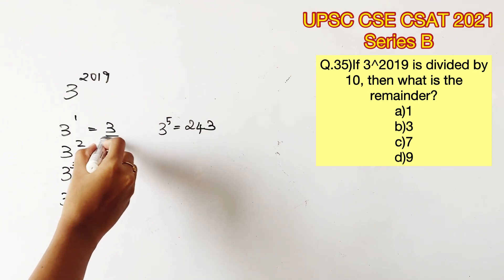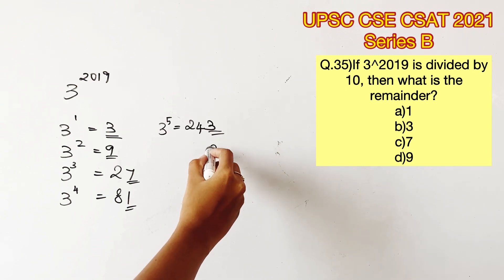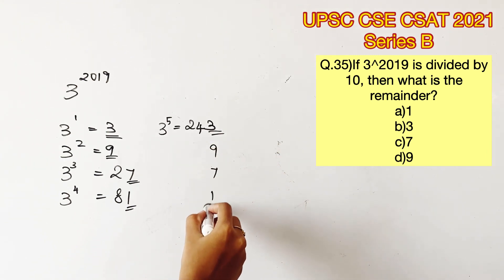Now if you notice the unit's place of all these powers, it goes from 3, 9, 7, 1 and then it repeats itself: 3, 9, 7, 1. So this pattern repeats in batches of 4.